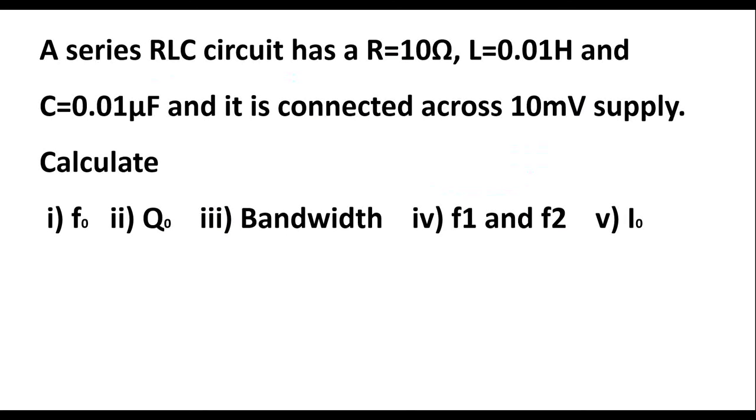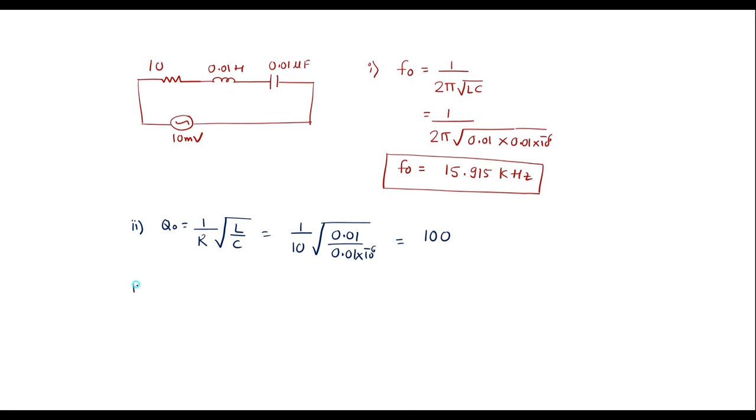Next we have bandwidth. The formula to calculate bandwidth is R / 2πL. R value is 10, so we have 10 / 2π × 0.01. Simplifying this, we get 159.155 hertz.